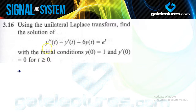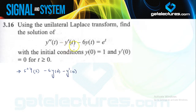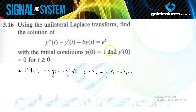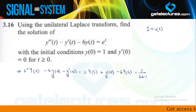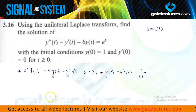Performing Laplace transformation on the equation: Laplace of y double dash t is s squared Y(s) minus s·y(0) minus y'(0). Laplace of y dash t is s·Y(s) minus y(0) plus y'(0), with a coefficient of minus 1. The term minus 6y(s) is added, and Laplace of e to the power t is 1 by (s minus 1), since e to the power t implies multiplication with u(t) in unilateral Laplace transform, giving 1 upon (s minus 1).